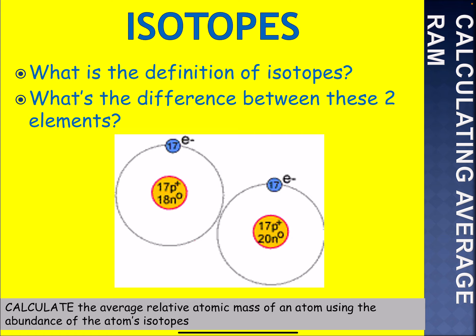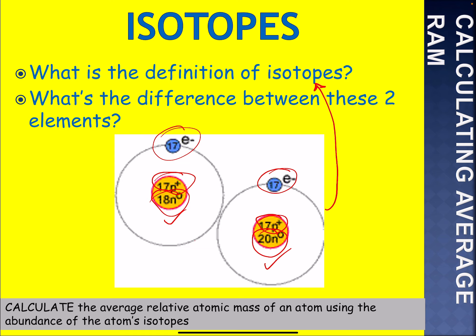We've already said this. What's the definition of isotopes? It's atoms of the same element with different number of neutrons, or atoms of the same element with different atomic mass. What's the difference between these two elements? They both have 17 electrons and 17 protons. However, one has 18 neutrons and the other has 20 neutrons. So the difference is the number of neutrons — in other words, these two are isotopes: same element, but different number of neutrons.